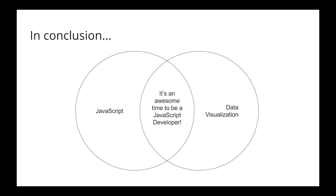My general conclusion is that given the state of the world and the state of the web today, it's an awesome time to be a JavaScript developer if you're into data visualization. JavaScript is essentially the technology of choice for doing some really neat stuff. The New York Times has done JavaScript developers the world over a huge service by having an awesome graphics department that makes all sorts of interactive graphics — and out of that department came CoffeeScript, probably my favorite dialect of JavaScript, and D3. So we have a lot to thank them for.